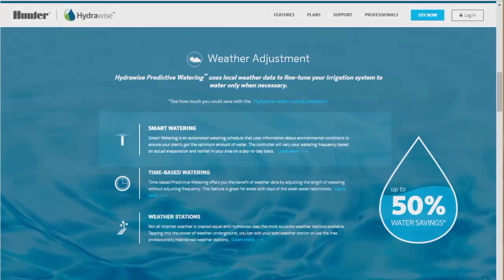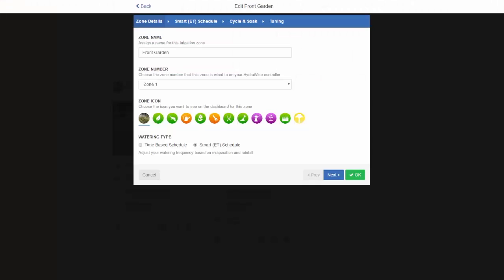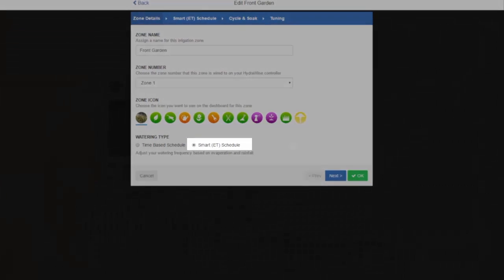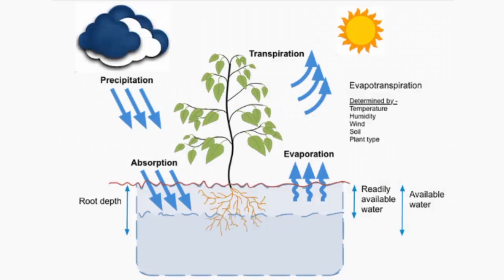Smart watering is an automated watering schedule that uses information about environmental conditions to ensure your plants get the optimum amount of water. Evaporation will draw moisture from your landscape, while rainfall and irrigation will add moisture. Understanding these conditions allows Hydrowise to decide when the time is right to water.